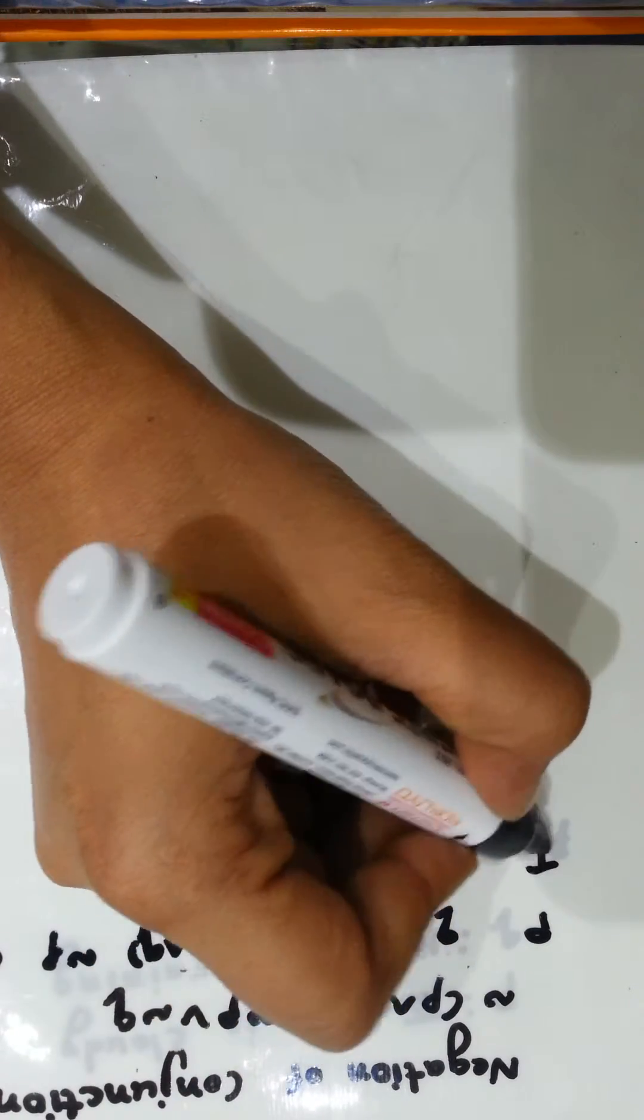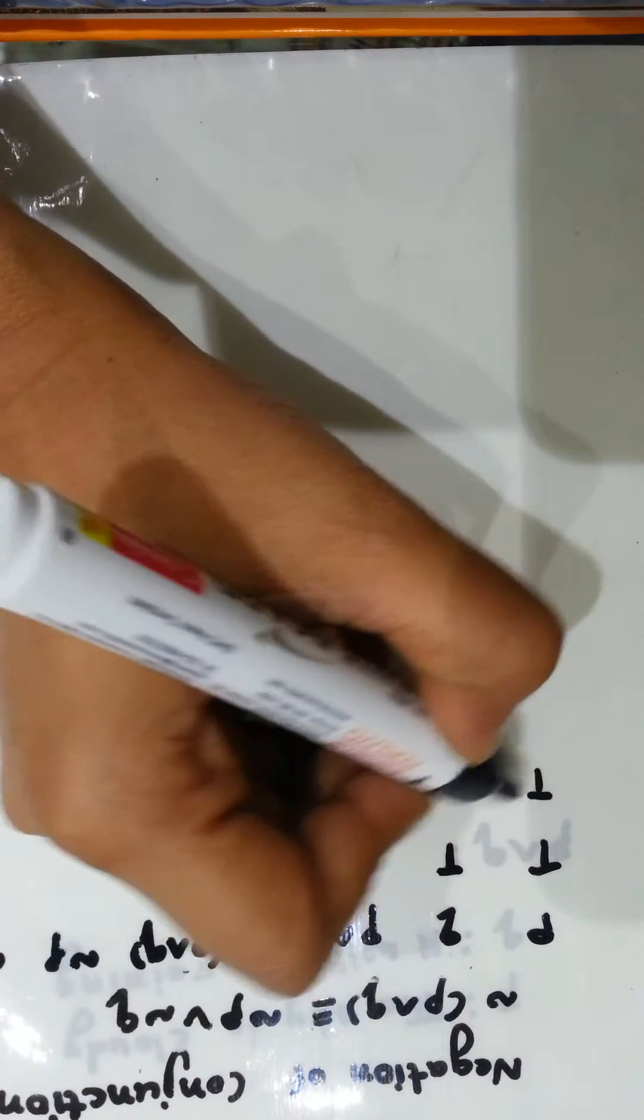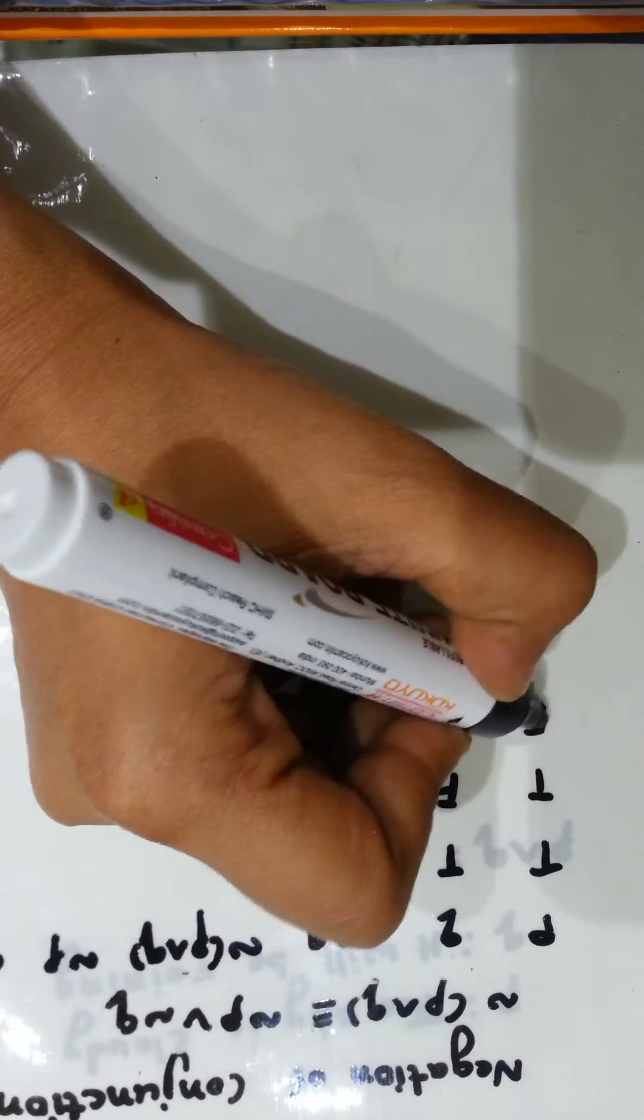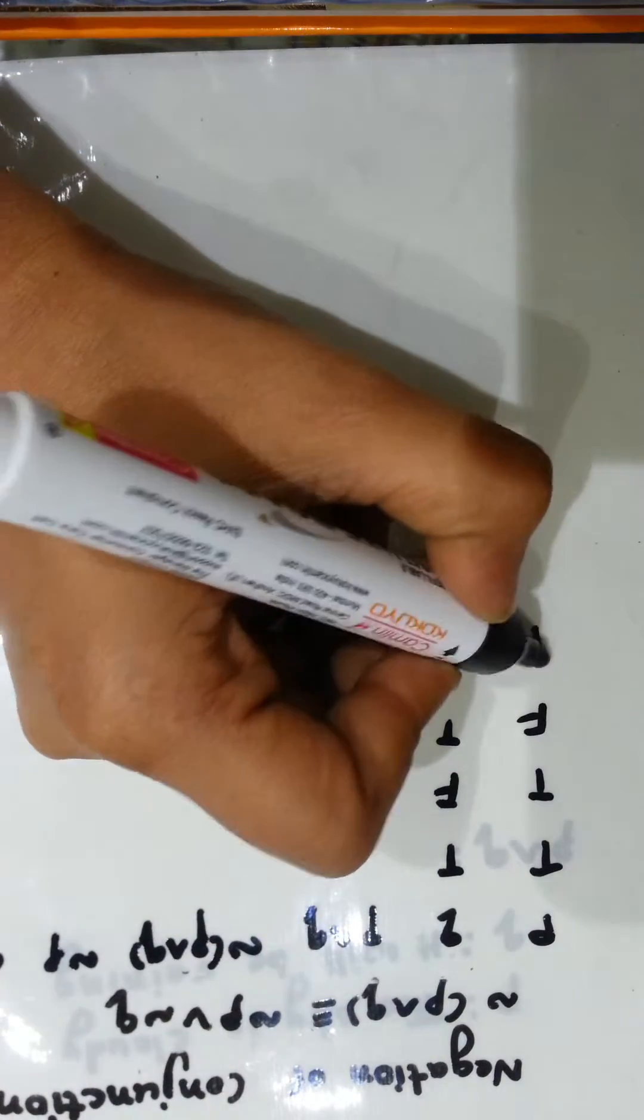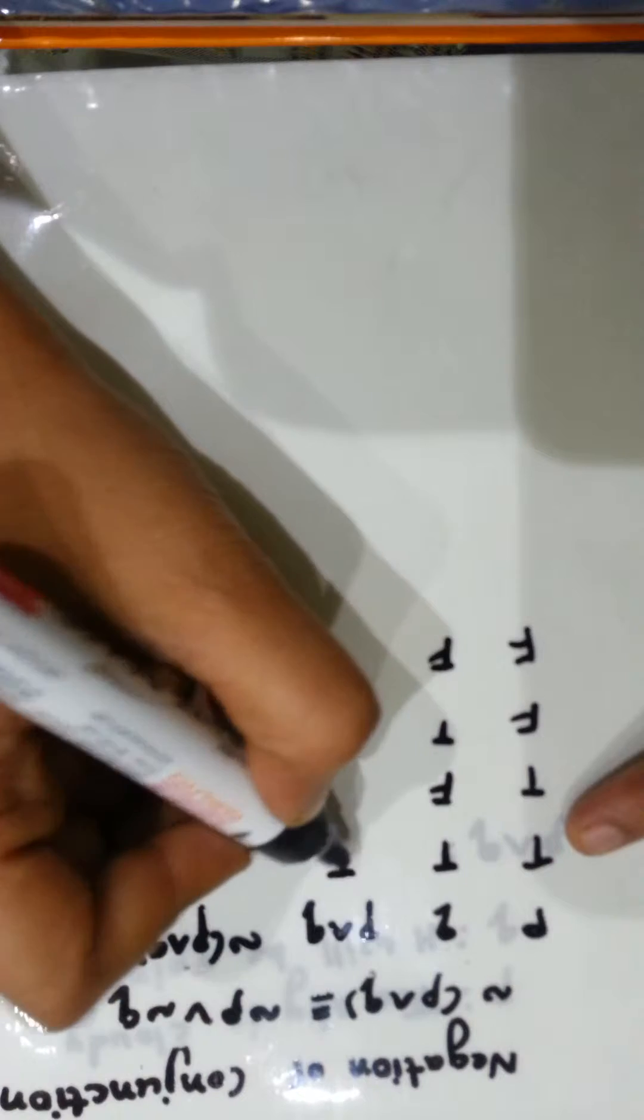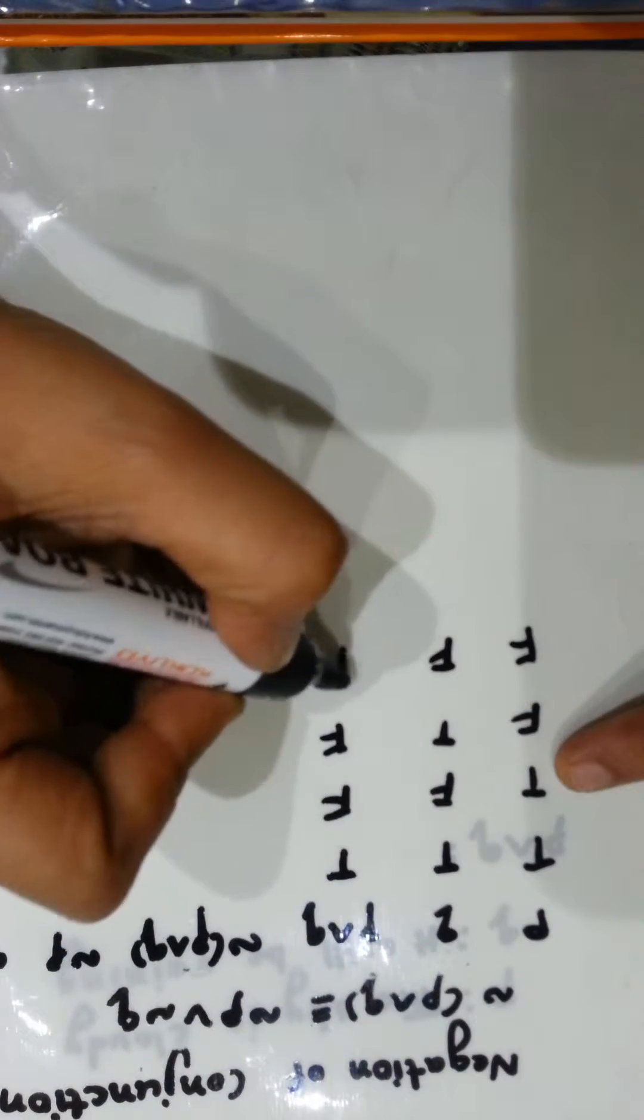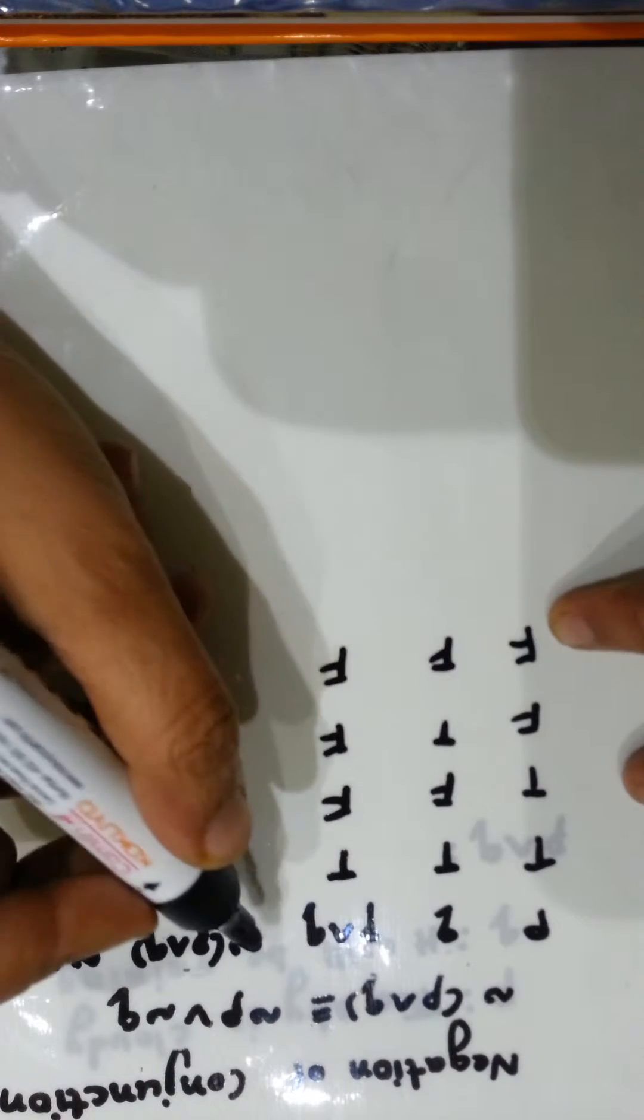Now we will prepare the truth table. As we have two statements, there will be the combination of TT, TF, FT, FF. P and Q—so if both are T then only it is T, otherwise in all the cases it will be F.